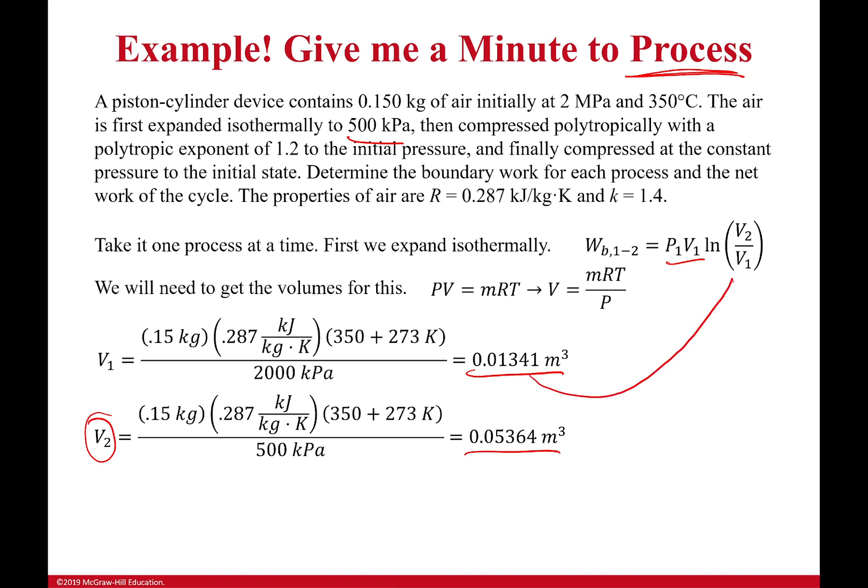My boundary work comes out to be just 37.2 kilojoules. So that is how much has been produced. It's positive because the expansion means it's doing work for me. I like that. I want it to do work for me.